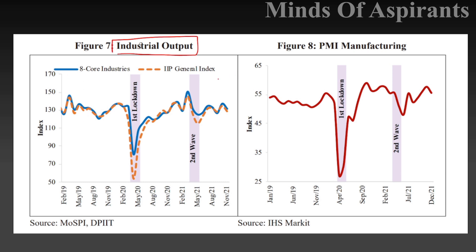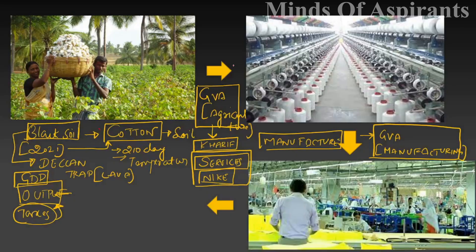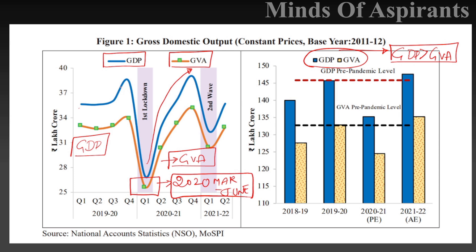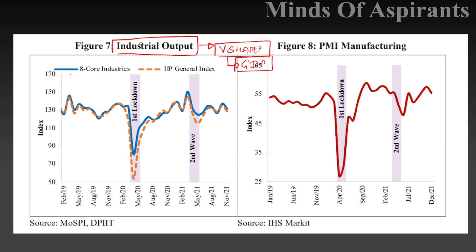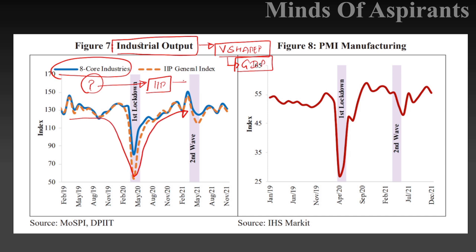When talking about V-shaped recovery, we should not just talk about GDP. Look at the industrial output figure — it shows a V-shaped recovery. We also need to look at the eight core industries and the Index of Industrial Production. In the preliminary examination, two questions were asked: one about the eight core industries constituting around 40 percent of IIP, and another about which of the eight core industries is the highest contributor.